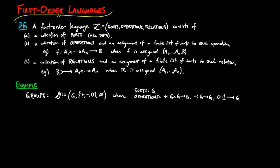This means the operation 0 is assigned the list with one sort. We also write a numeral 1, or G to the 0, for the empty product. And the signature of groups has no relations.